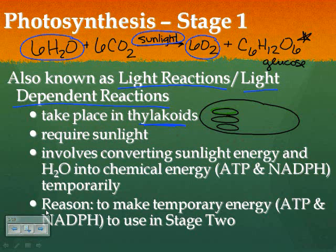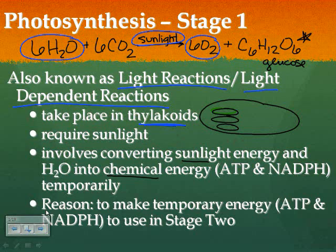At the thylakoids, what we're going to be doing is basically converting energy. We're going to take sun energy and turn it into chemical energy. Then we're going to take that chemical energy, move it on to the next stage, and the next stage is where we're going to get our big product — our glucose.